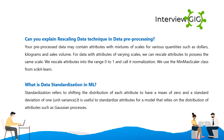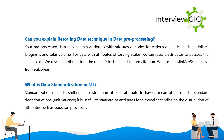What is data standardization? Standardization refers to shifting the distribution of each attribute to have a mean of 0 and a standard deviation of 1 (unit variance). It is useful to standardize attributes for a model that relies on the distribution of attributes, such as Gaussian processes.